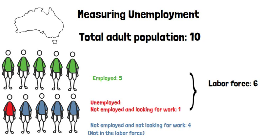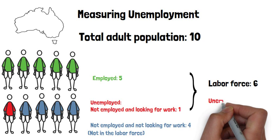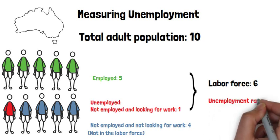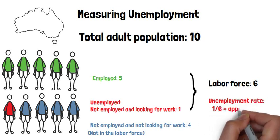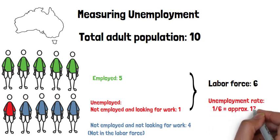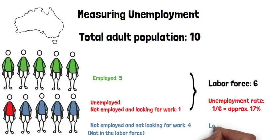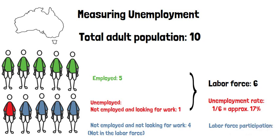The unemployment rate equals the number of people unemployed as a share of the total labor force. In this example, the size of the labor force is 6, and the unemployment rate is 1 over 6, or nearly 17%. Another important measure is the labor force participation rate.